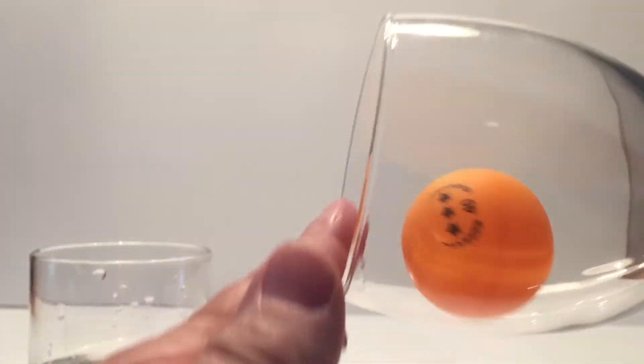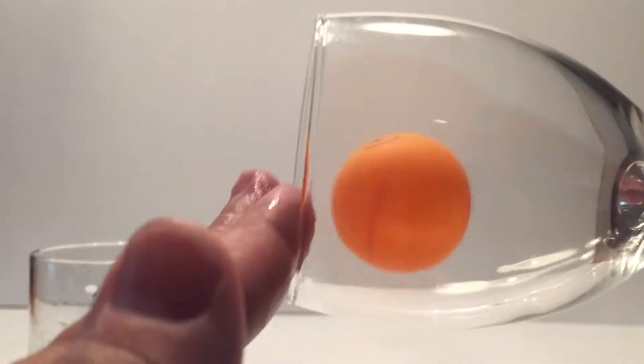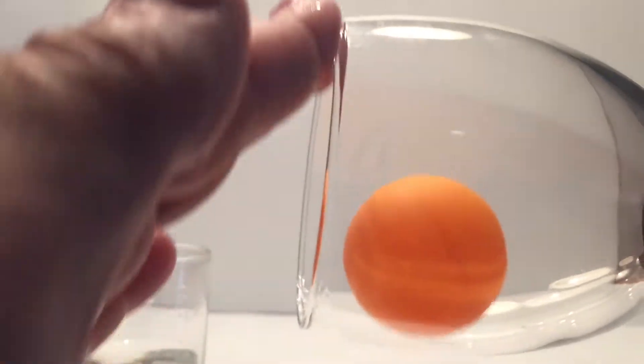The ping-pong ball dances because it gets pushed around by the vibrations of the glass each time the ball comes in contact with the edge of the glass.